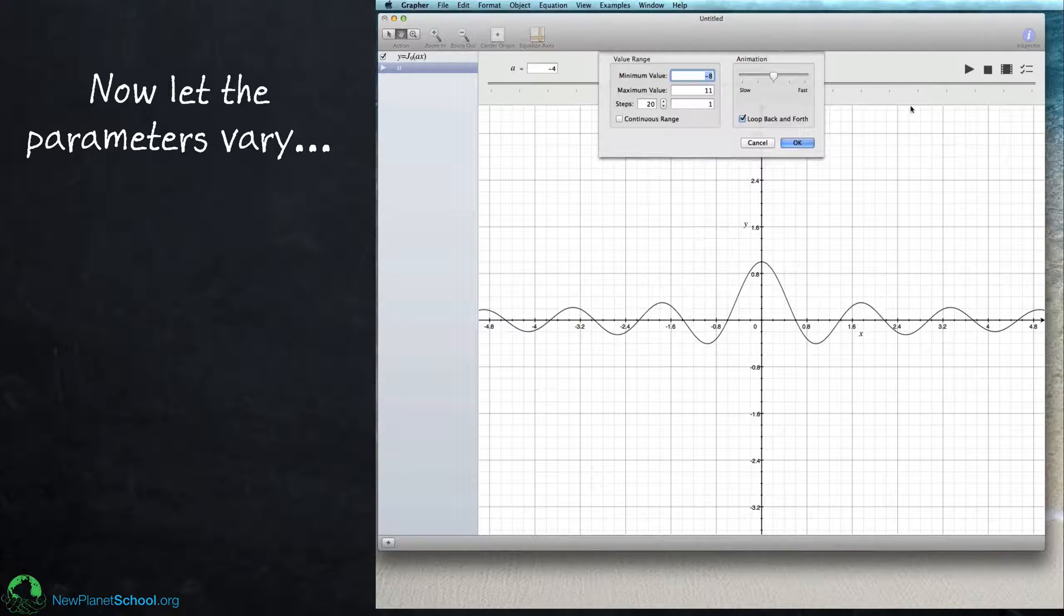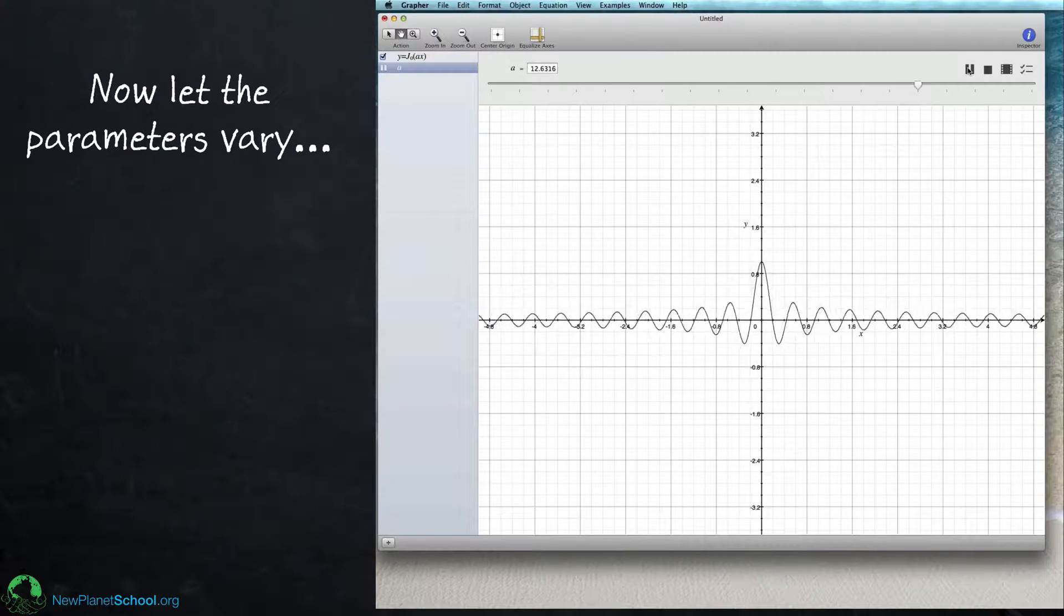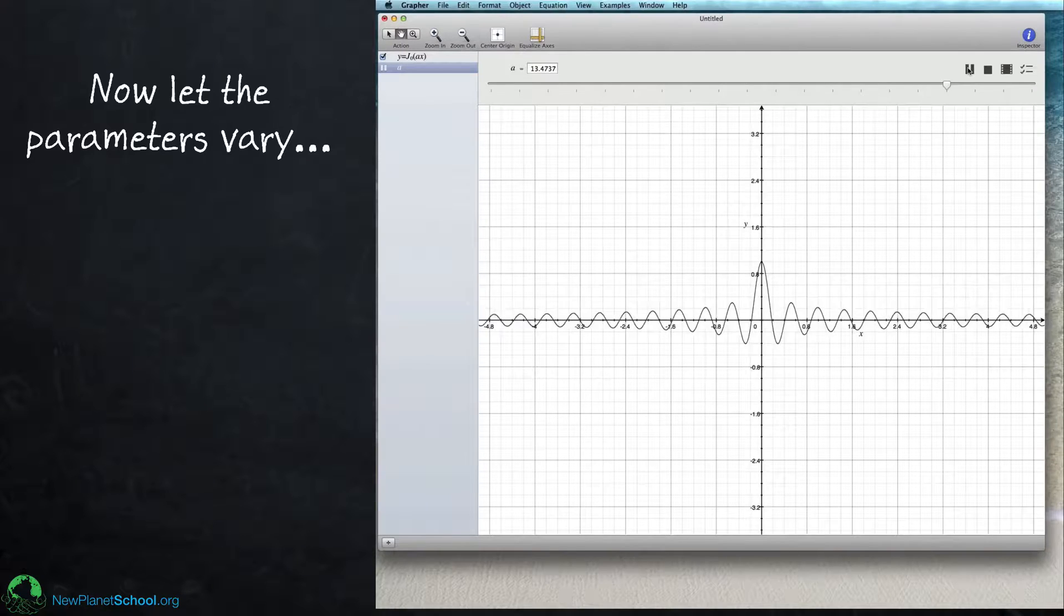And if you want to customize it, click over here on the right. You can change the minimum value. Let's start A at zero and let's make A go up to say 16 with 20 steps. You then press play again. And now it uses the range of A values that you specified there.